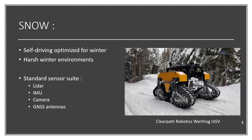For this project, we use a ClearPath Robotics Warthog UGV for experimental validation, and this UGV is equipped with the standard autonomous navigation sensor suite, which includes sensors such as LiDAR, IMU, camera, and GNSS antennas.